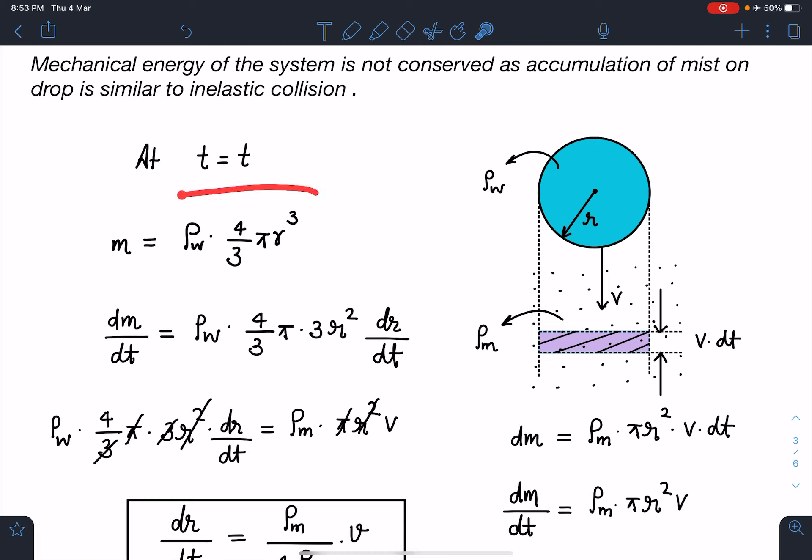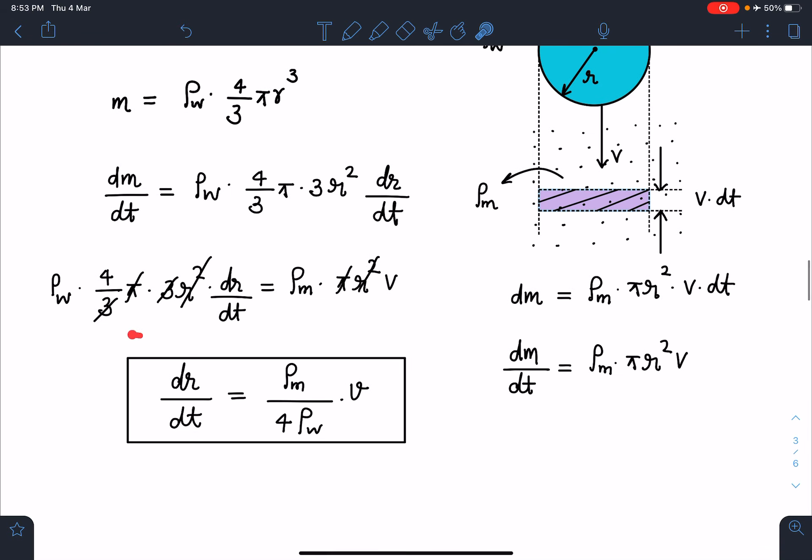At the same time, I can write the mass of the drop using density of water. The mist, once it is sticking to the drop, converts into water. Mass m = ρ_w·(4/3)πr³, assuming this shape remains spherical. When I differentiate this relation, I get ρ_w·(4/3)π·3r²·dr/dt. When I simplify, dr/dt = (ρ_m/4ρ_w)·v.